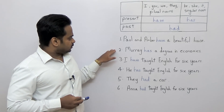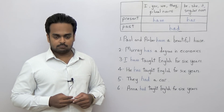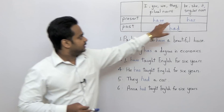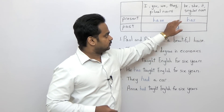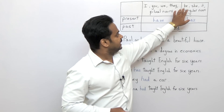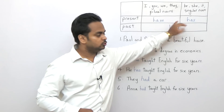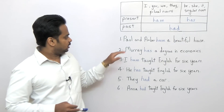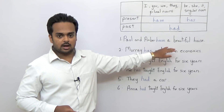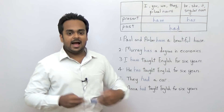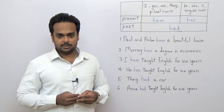Have a look at this sentence: 'Murray has a degree in economics.' Murray is a singular noun. So if you have a sentence in the present tense but the subject is he, she, it, or any singular noun, then we will use 'has.' Murray is a singular noun, so 'Murray has a degree in economics,' 'he has a degree in economics,' 'she has a degree in economics,' etc.